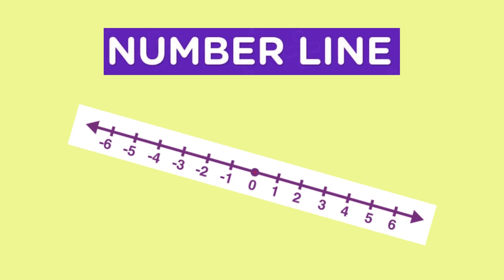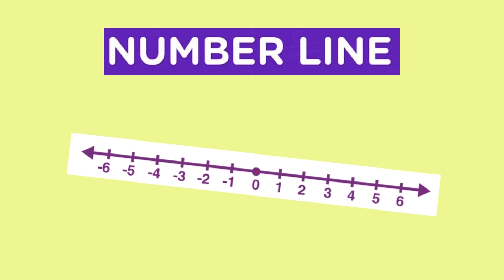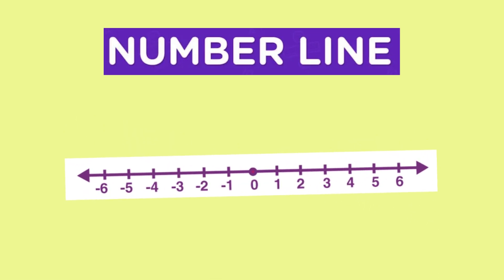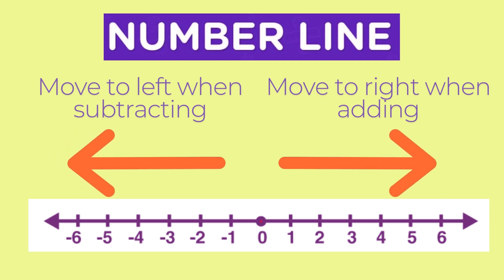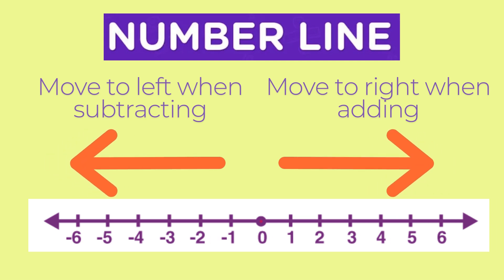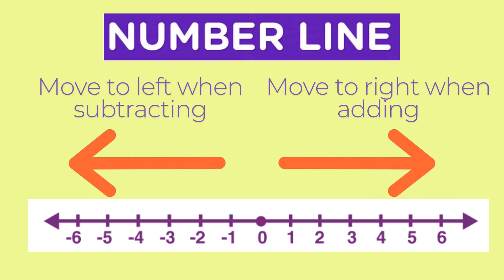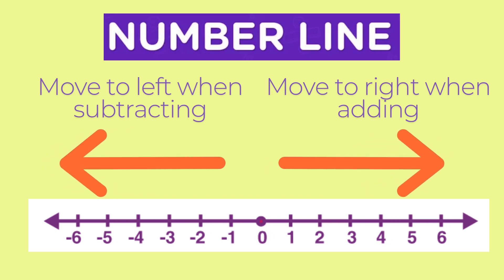Now let's look at how to add integers on a number line. This method shows how adding and subtracting can be visualized as moving left or right. When adding, we move to the right, and when subtracting, we move to the left on the number line.